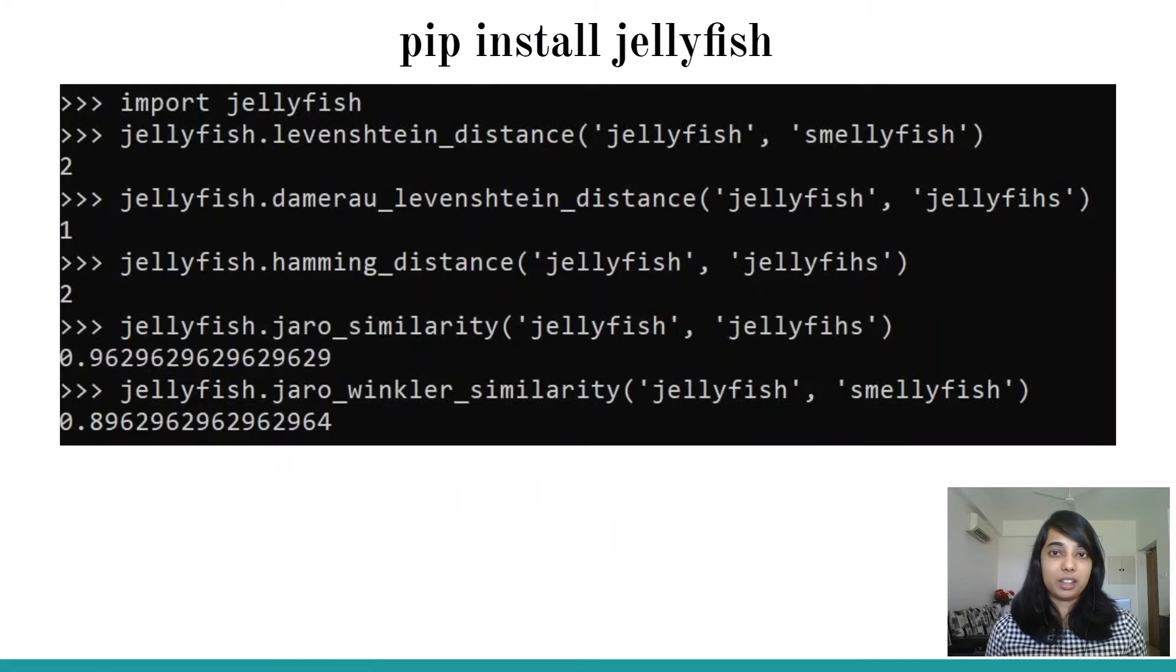If you have a use case for example where you need to autofill or you have your start menu and you are typing an application name and it predicts the probable application names, that's where your prefix remains the same. That is taken into account and Jaro-Winkler works amazing there. There is a package called jellyfish and there are multiple other packages where you can just call these functions and give the two strings and get the output. The first three give you the edit distance as output and the last two (Jaro and Jaro-Winkler) give you the similarity ratio between 0 to 1.